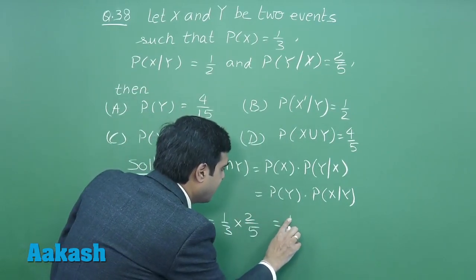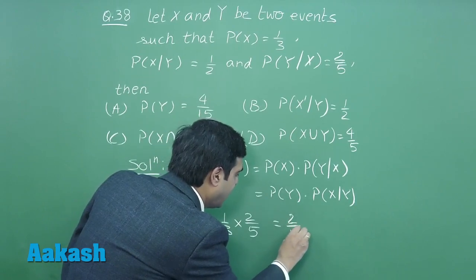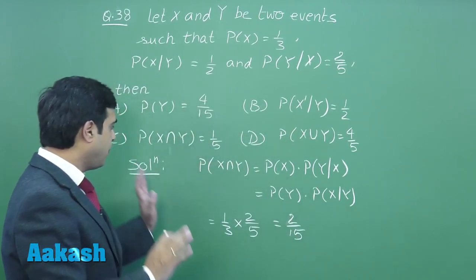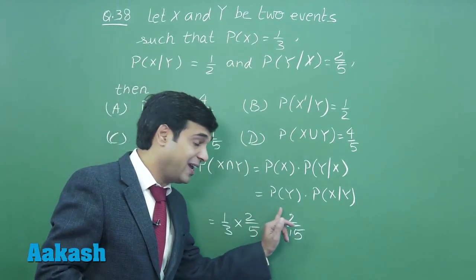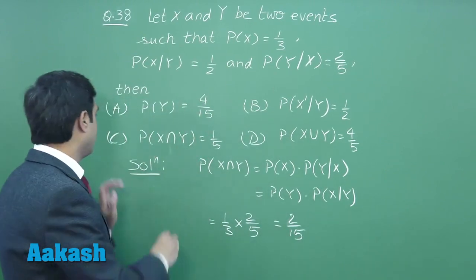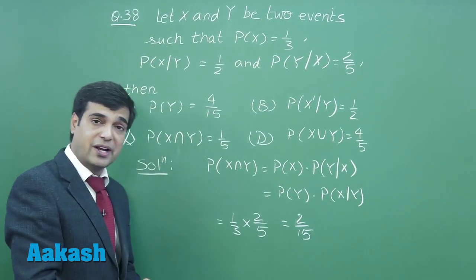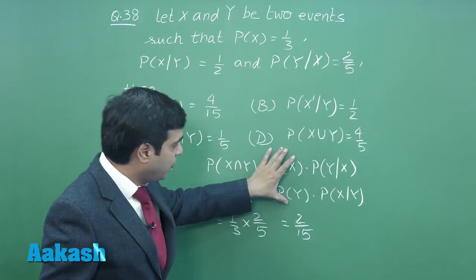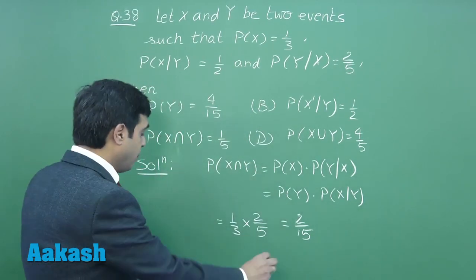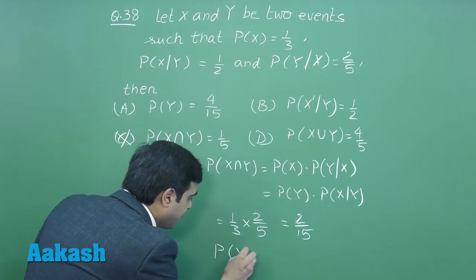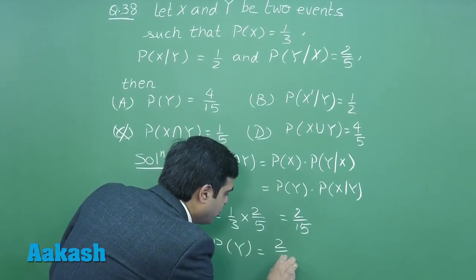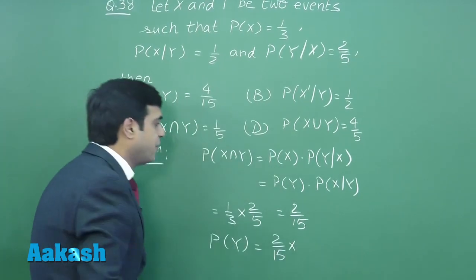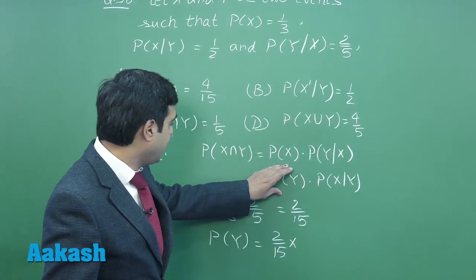Simplifying this gives us simply 2/15. So the probability of X intersection Y is 2/15. Clearly option C is not correct. Next, probability of Y can be found using the formula. Probability of Y = 2/15 divided by probability of X given Y.